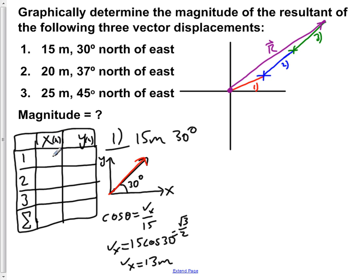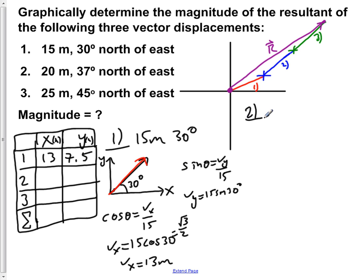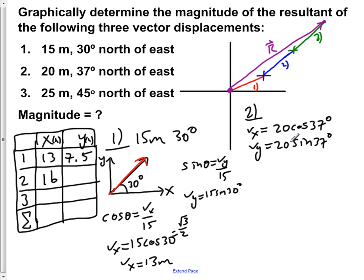So x is 13 meters and y is in meters. To solve for the y component, we use sin of theta equals vy over 15, so vy equals 15 sin of 30 degrees. The sin of 30 is one half, so half of 15 is 7.5. Now we do the same for vector two: vx equals 20 cos of 37 degrees, which gives us roughly 16 meters, and vy equals 20 sin of 37 degrees, which gives us roughly 12 meters.